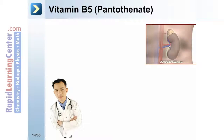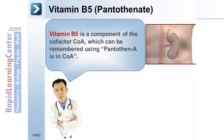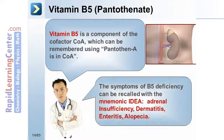Vitamin B5 is a component of the cofactor CoA, which can be remembered using 'Pantothenate is in CoA.' The symptoms of B5 deficiency can be recalled with the mnemonic IDEA, which stands for adrenal insufficiency, dermatitis, enteritis, and alopecia.